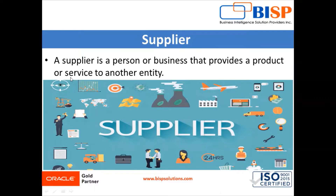So what is a supplier? A supplier is a person or business that provides a product or services to another entity. It means that a supplier is a person, organization, or other entity that provides something that another person, organization, or entity needs. We commonly use the term vendor instead of supplier, but in supply chain management applications we use the term supplier.